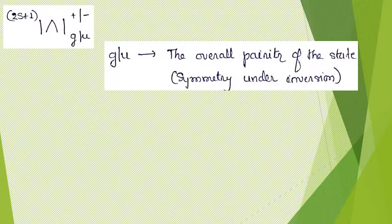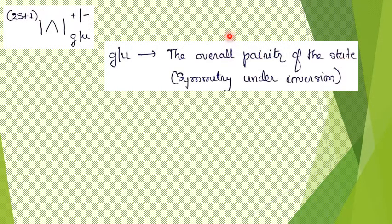Now let us go to the G or U part. This represents the overall parity of the state. It is based on the electronic configuration of the HOMO — the highest occupied molecular orbital — whether that orbital's symmetry is G or U. The overall parity is decided based on that.